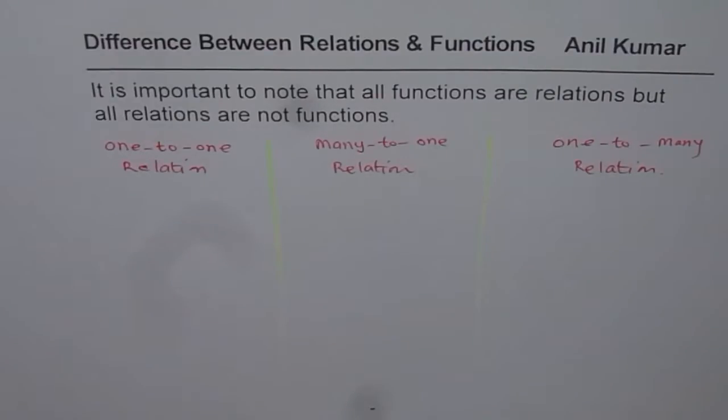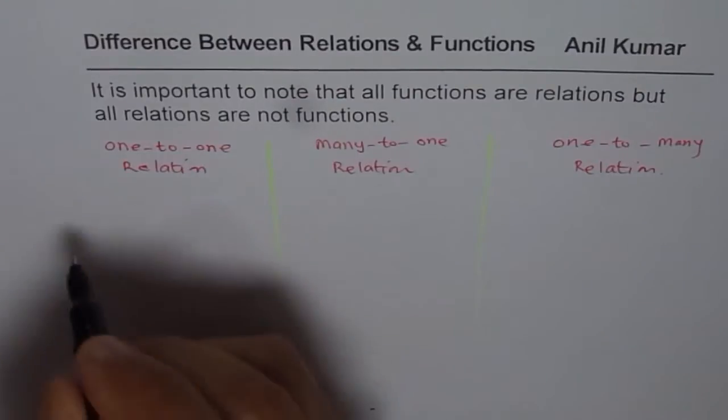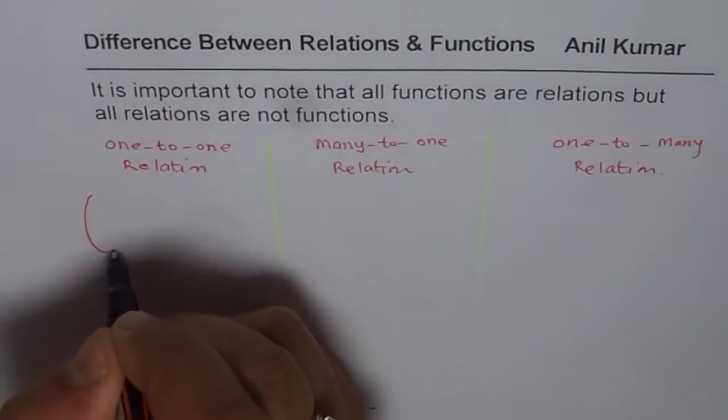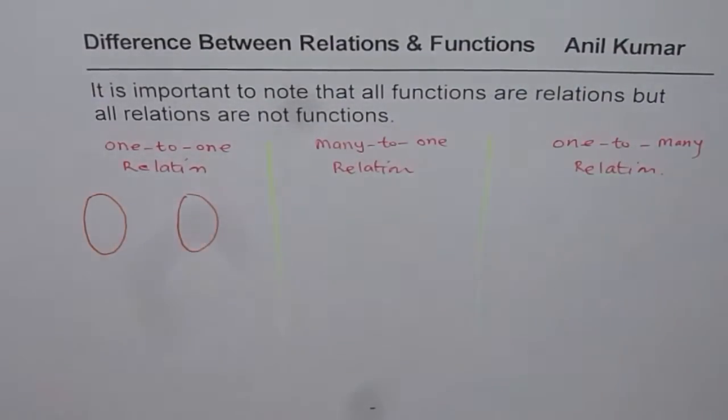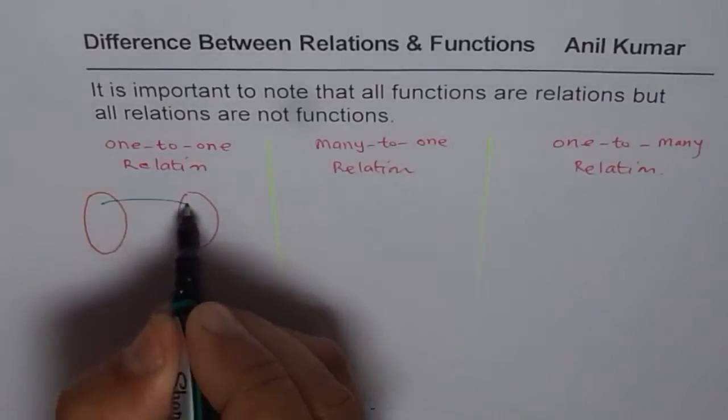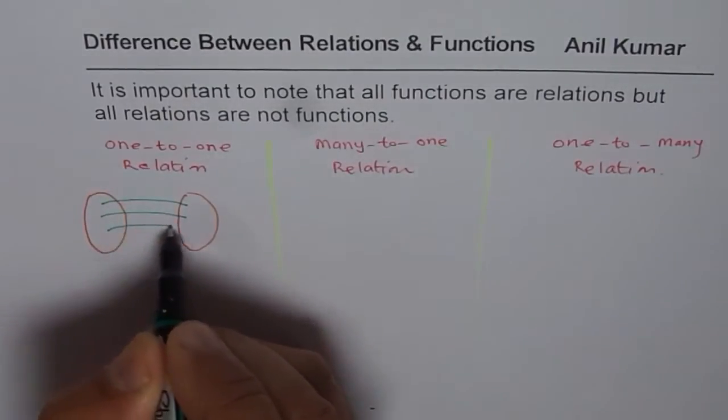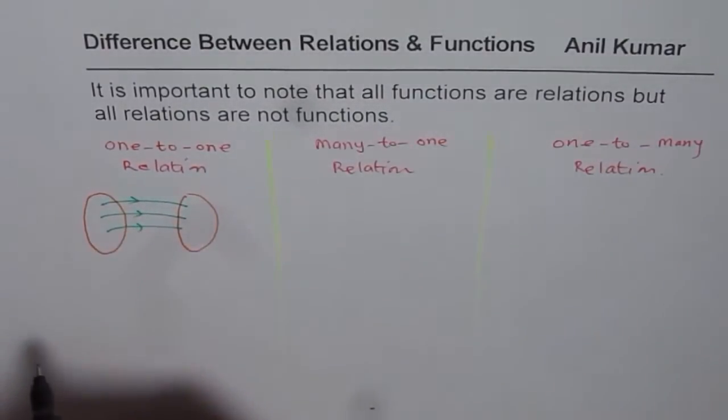When we say one-to-one relation, it really means that from the domain of the relation to the range, the linking or the correspondence of each element in the domain to that in the range is kind of like this.